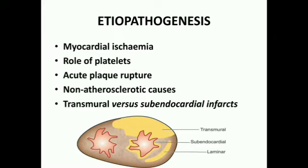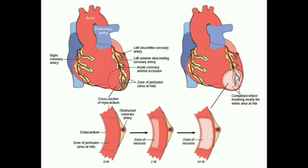Fifth is transmural versus sub-endocardial infarcts. Infarction means the death of myocardial muscle — those muscles no longer have the capacity to pump blood. Infarcts can be divided into three types: transmural, sub-endocardial, and laminar. The diagram shows the progression over time from zero to 24 hours after the event.